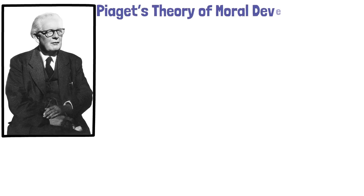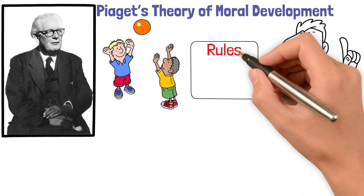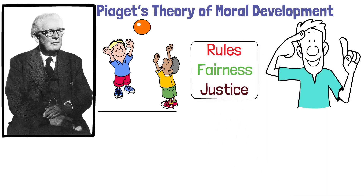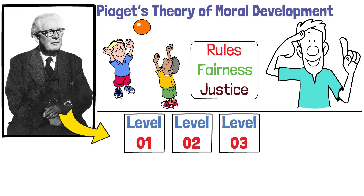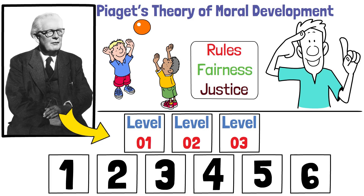Piazza's theory of moral development focuses on how children's understanding of rules, fairness, and justice evolves through cognitive stages. He identifies three levels of moral development that correspond to six cognitive stages.